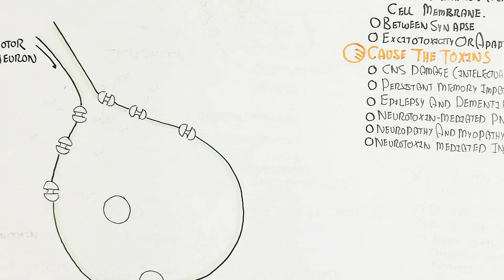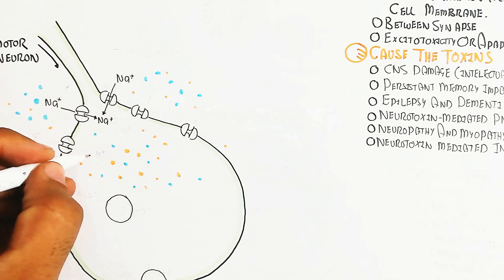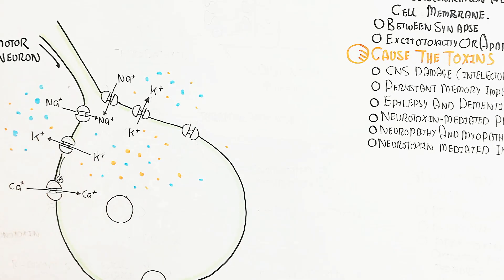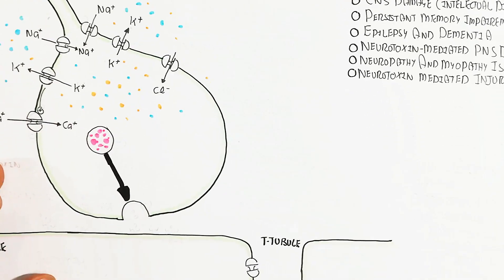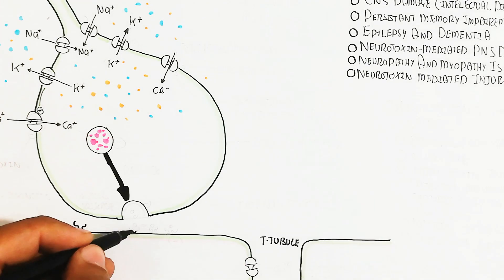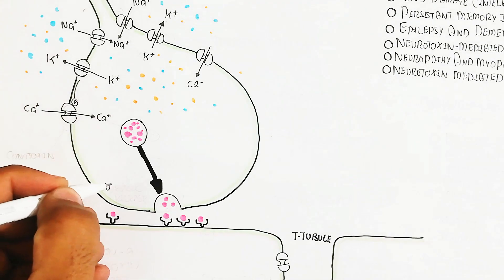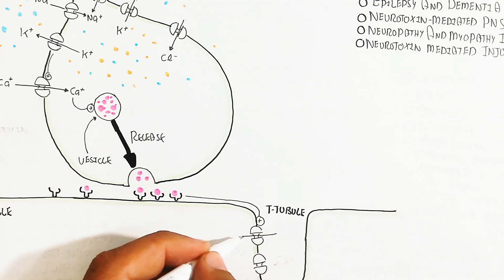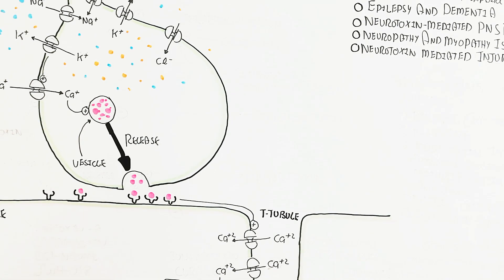The motor neuron transmits signals to the muscle. Sodium channels open and sodium moves inside while potassium moves outside; calcium triggers the calcium-gated channel to open, leading to exocytosis of vesicles. The released neurotransmitter — for example acetylcholine — binds to its receptor, triggering the sodium channel and then the calcium channel. The t-tubule calcium channel activates the endoplasmic reticulum using the same mechanism, and troponin binds the actin filament triggering muscle contraction.